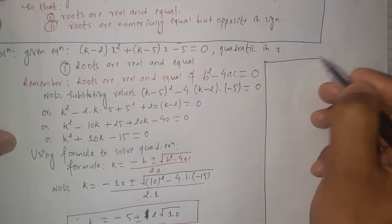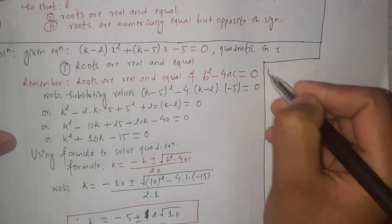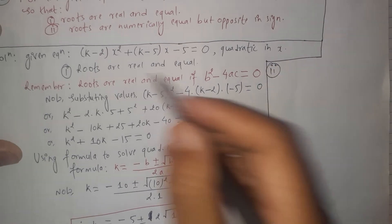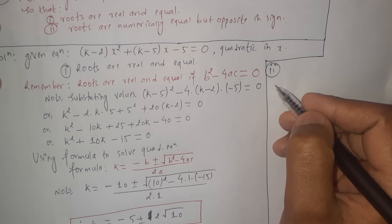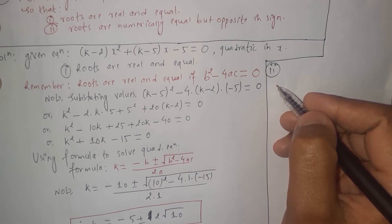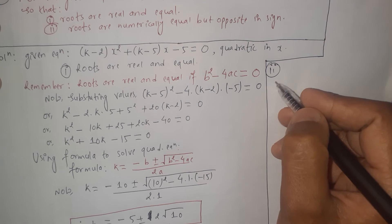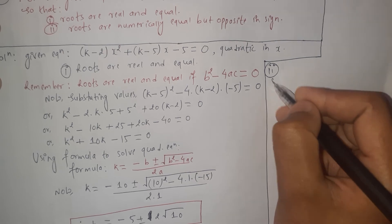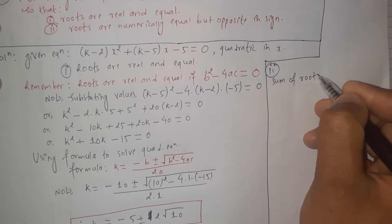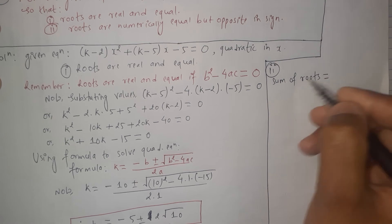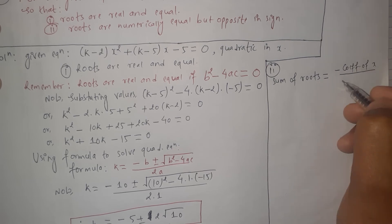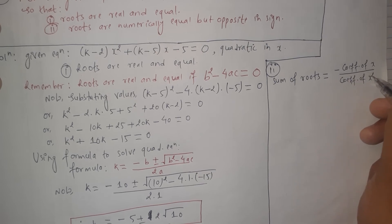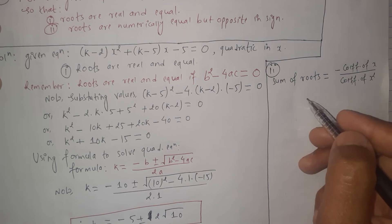Now moving to the next case: the roots are numerically equal but opposite in sign. We already studied about the sum and product of roots in quadratic equations — I will share the link to that video in the description box. Please remember this fact: in a quadratic equation, the sum of the roots always equals minus the coefficient of x divided by the coefficient of x squared.